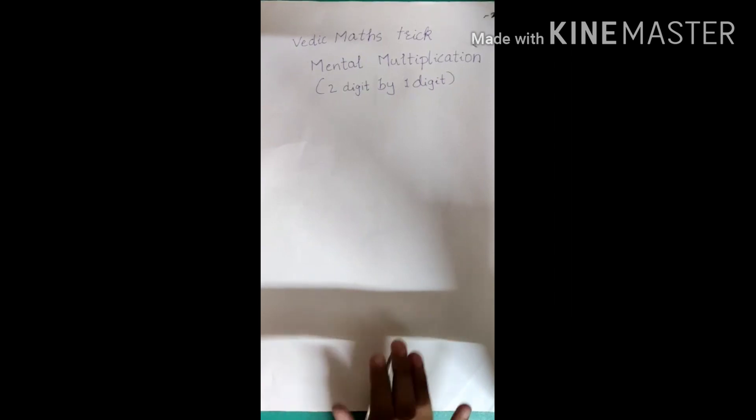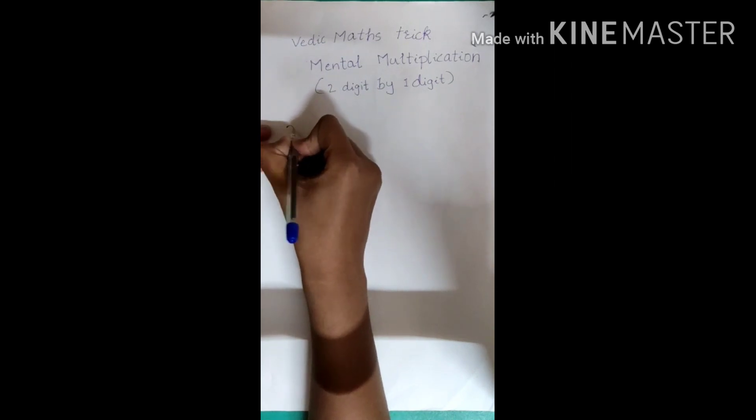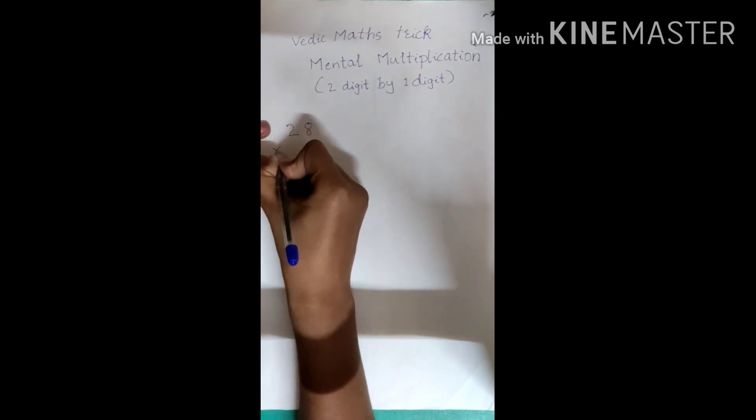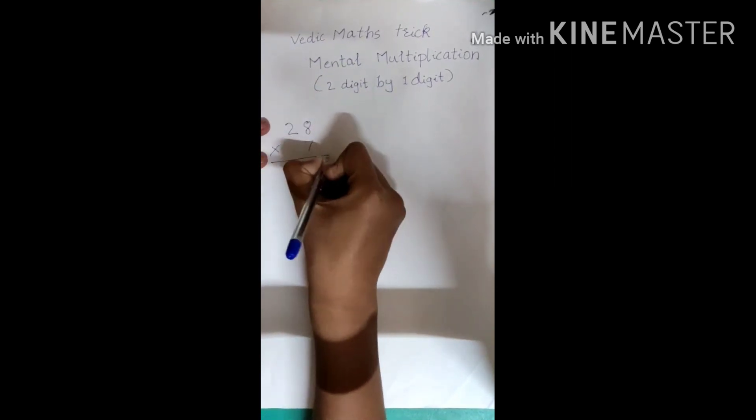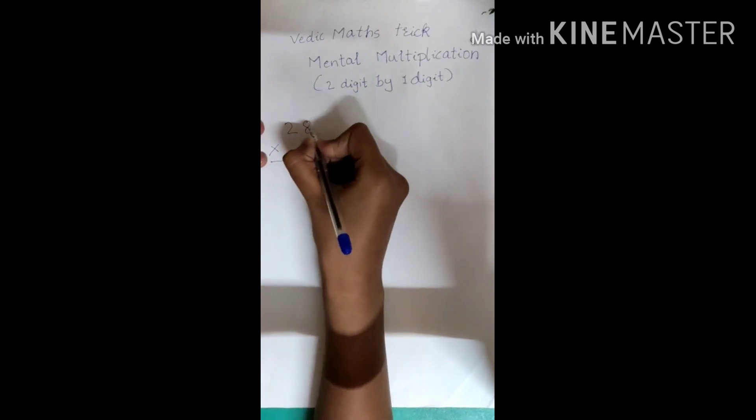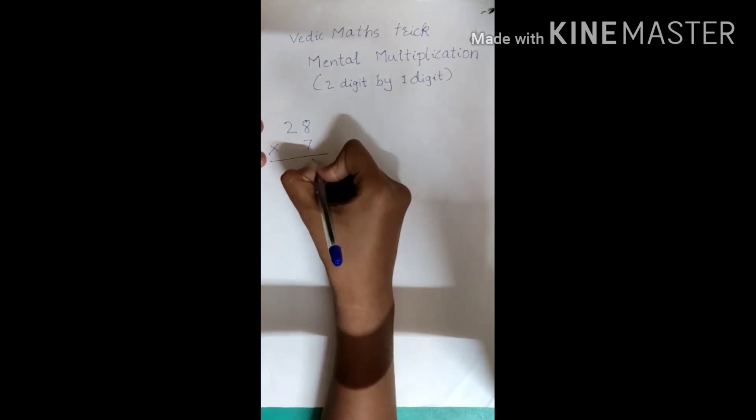Let's take a simple example. 28 into 7, so normally we do 8 into 7 plus 56.